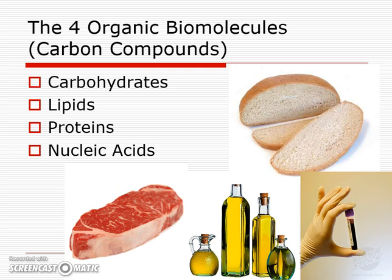We call them organic because they come from life or they have carbon built into them. Those kinds of things are carbohydrates, lipids, proteins, and nucleic acids. Here are pictures of them: I have bread for carbohydrates, steak for protein, oil for fat — aka lipids — and a vial of blood because a vial of blood has DNA in it, and DNA is a nucleic acid.